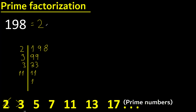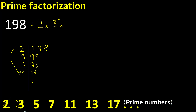2 appears 1 time, therefore the exponent is 1 — equal to the same number. 3 appears 2 times. 11 appears 1 time. Prime factorization complete.